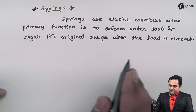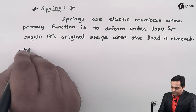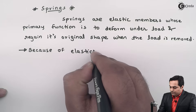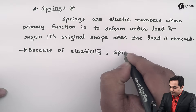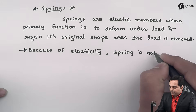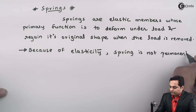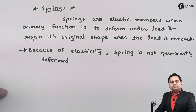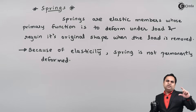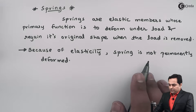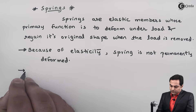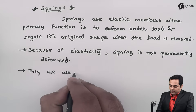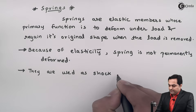Because of elasticity, springs are not permanently deformed. Since springs are elastic, when the load is applied the spring will change its shape, but they are not permanently deformed. Next, they are used as shock absorbers.